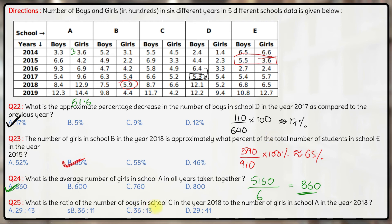What is the ratio of the number of boys in school C in the year 2018 to the number of girls in school A in 2018? Boys in school C in 2018 is 8.7, which is 870. Girls in school A in 2018 is 12.9, which is 1290. We calculate the ratio 870:1290. Cancelling the common zeros and dividing by 3: 87/129 = 29/43. So the ratio comes out to be 29:43. Hence the correct answer is Option A: 29:43.